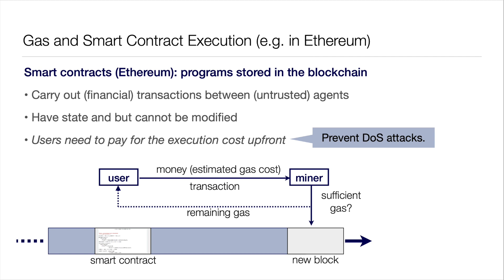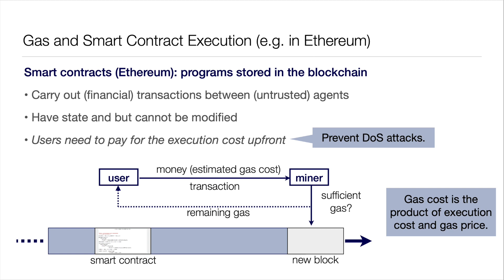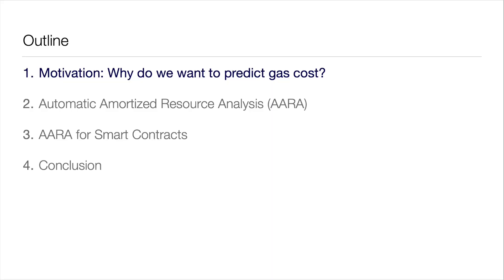If the gas was sufficient, your transaction ends up in a new block — if you're lucky. The actual cost also depends on the gas price, but that's not so relevant for this talk. So the outline: first I'll tell you why we want to predict gas use statically.